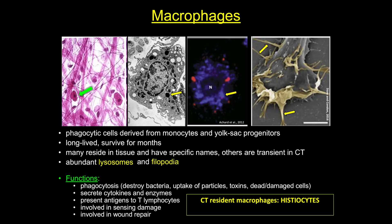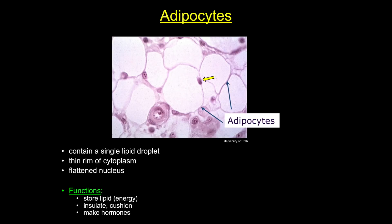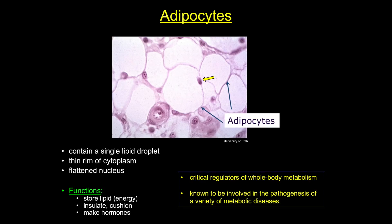Macrophages are also critical for wound repair. Next let's look at adipocytes, probably the most recognizable cell in the body. These clear-looking cells contain a single lipid droplet with a very thin rim of cytoplasm, and they have a flattened nucleus. Adipocytes were long thought to have the simple function of insulation and cushioning, but now we know they have critical functions in storing lipid as energy and in making hormones. In fact, these cells are now known to be involved in a number of metabolic diseases.